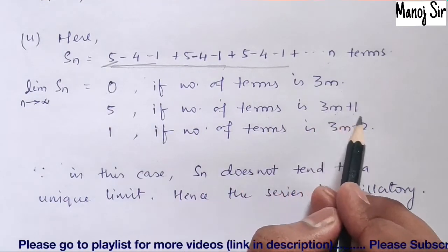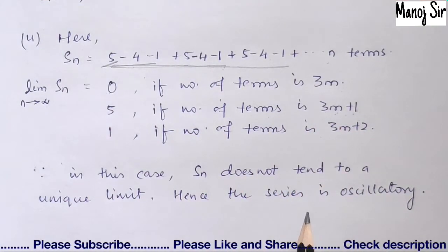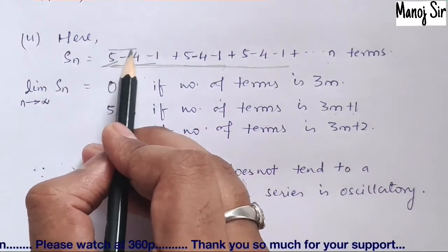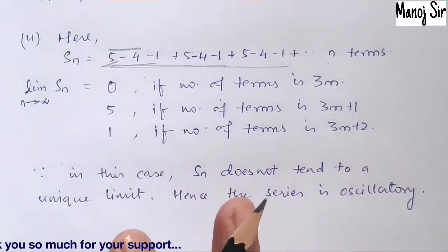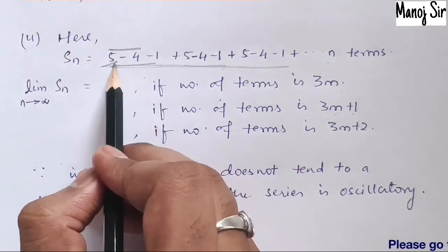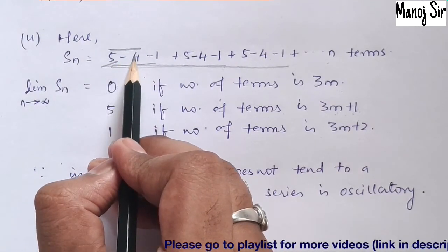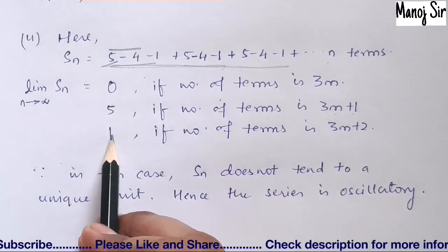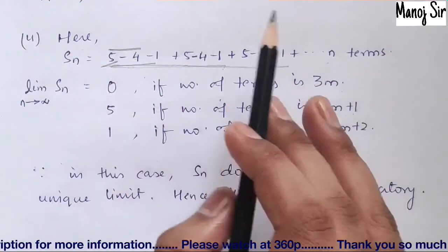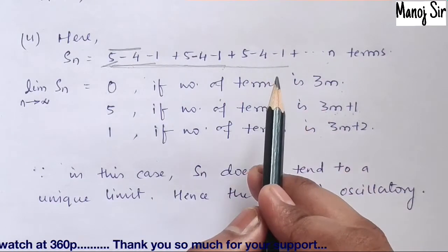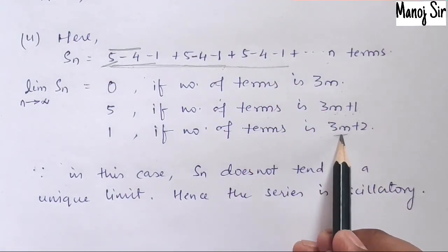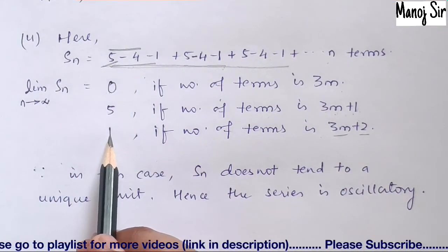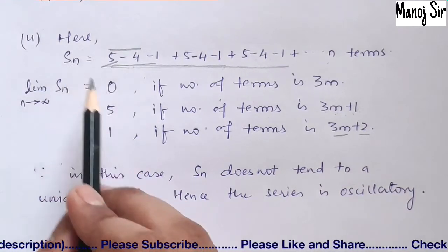Case 3: the number of terms is n = 3m + 2. The last two terms are 5 and −4, which sum to 1. All the remaining 3m terms sum to 0. So Sn = 1 when the number of terms is 3m + 2.